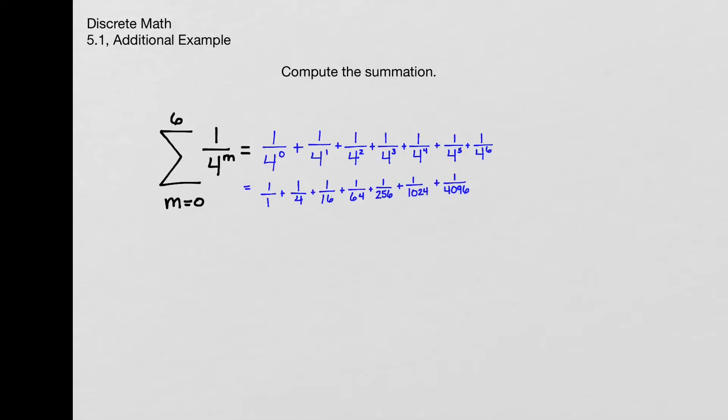Now we can get the common denominator, which is 4096, and rewrite each of these fractions using that least common denominator. We have 4096 over 4096 plus 1024 over 4096, and so on.